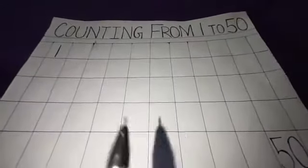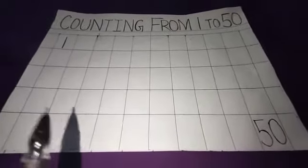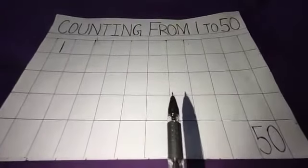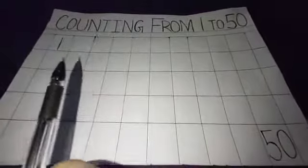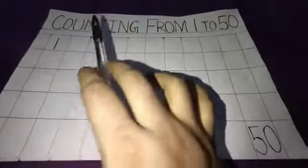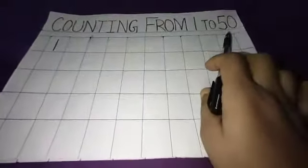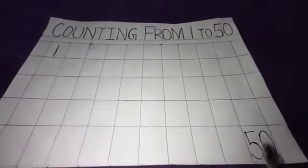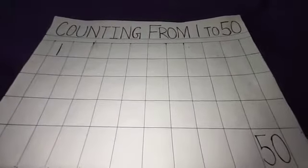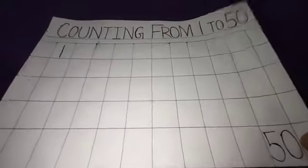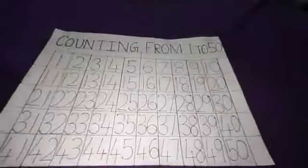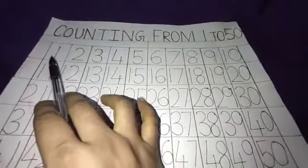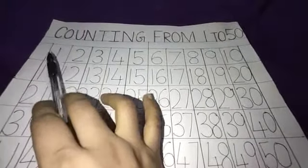You have a notebook, so write in your notebook counting from 1 to 50, like this. See 1 to 50. See how I have written here. See properly and write in your copy. See how I have written here.